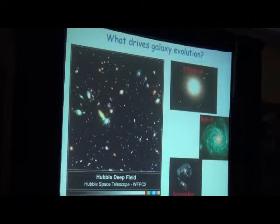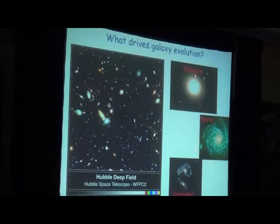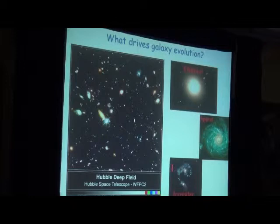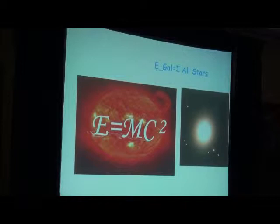The main problem of understanding galaxy formation and evolution is understanding what processes drive the evolution of galaxies from the early epochs. This is the Hubble deep field showing galaxies at very high redshift, meaning a couple of billion years after the Big Bang. They evolve into the main types: elliptical massive galaxies, spiral galaxies, and irregulars. Ellipticals are the most used as cosmological probes because they are the oldest and most massive.